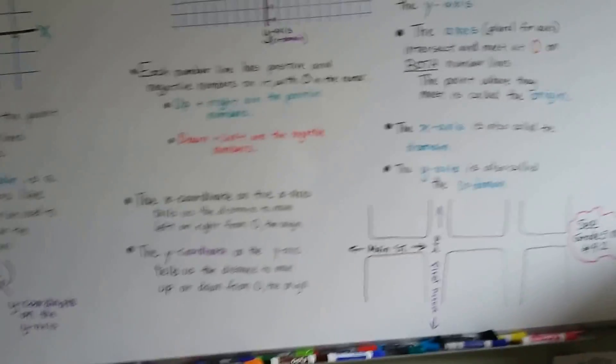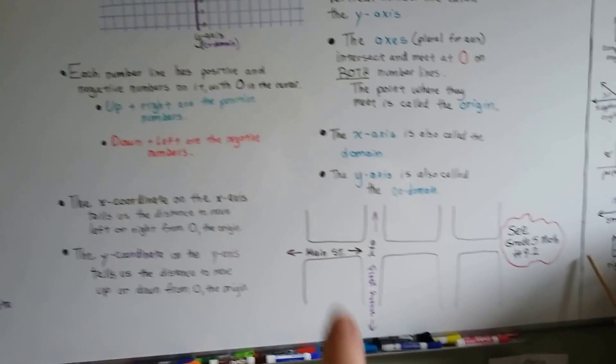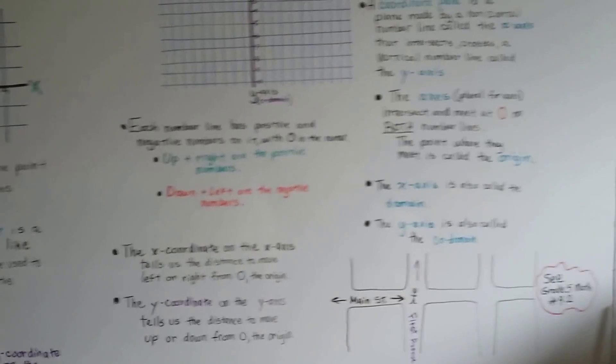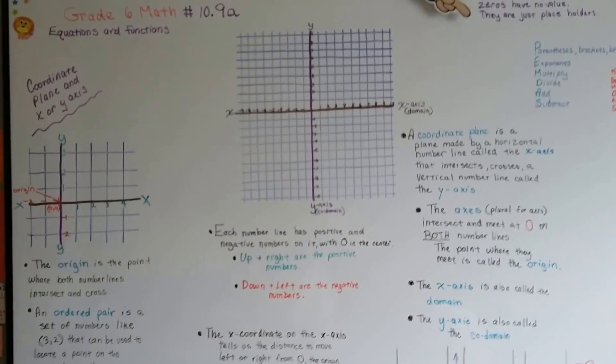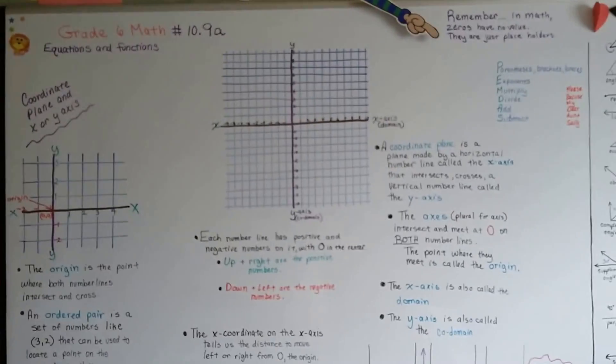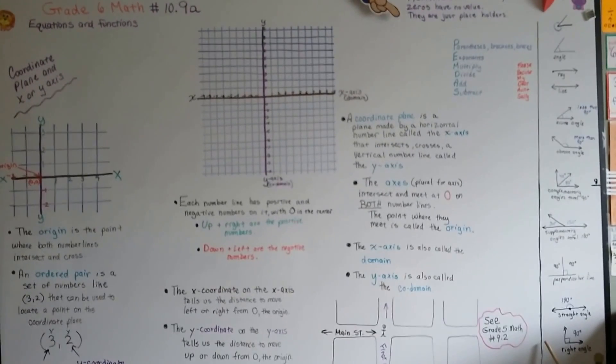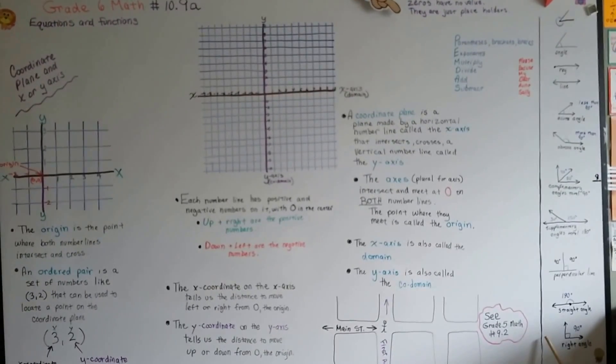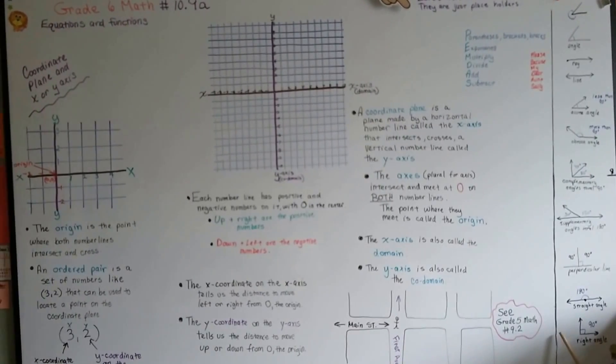It's like a city street. And you can see my grade 5 math video, number 9.2, and that is going to explain all of this again, maybe a little easier because it's grade 5, if that's what you want. So we're going to move on. We're going to do 10.9b, and I'm going to continue talking about this and show you how to actually plot points on the coordinate grid, coordinate plane. See you there. Bye.